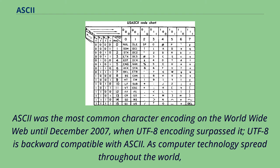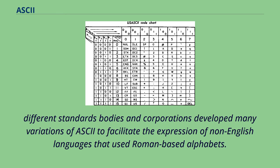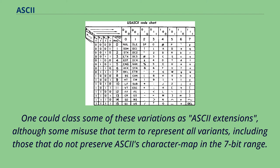ASCII was the most common character encoding on the World Wide Web until December 2007, when UTF-8 encoding surpassed it. UTF-8 is backward compatible with ASCII. As computer technology spread throughout the world, different standards bodies and corporations developed many variations of ASCII to facilitate the expression of non-English languages that used Roman-based alphabets. One could class some of these variations as ASCII extensions, although some misused that term to represent all variants, including those that do not preserve ASCII's character map in the 7-bit range.